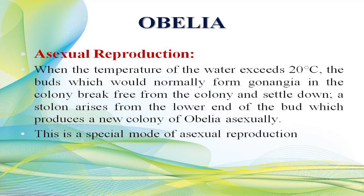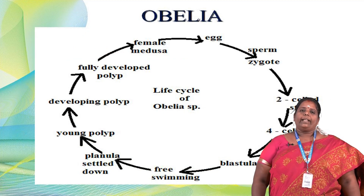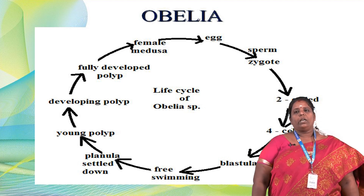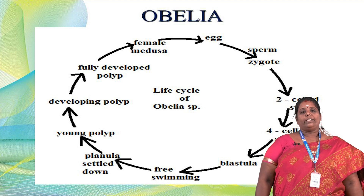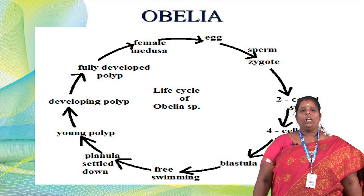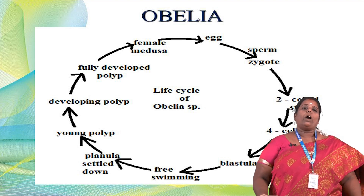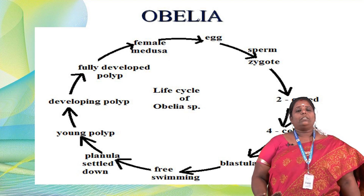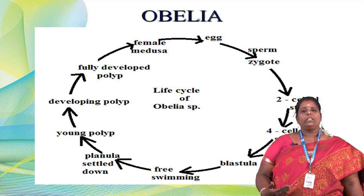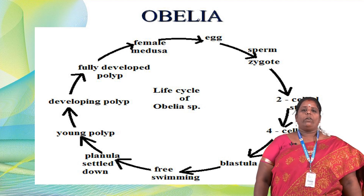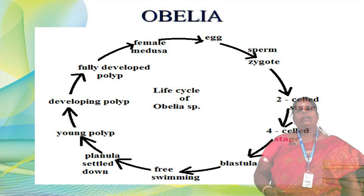In the life cycle diagram: the female medusa produces eggs, the male medusa produces sperm; egg and sperm fuse, a zygote is formed, then the two-cell stage, four-cell stage, blastula, and then planula — a free-swimming larva — which settles down and produces a young polyp. The young polyp develops into a developing polyp, and then a fully developed polyp. Only the fully developed polyp has the trimorphic colony — young polyps are not yet fully developed.